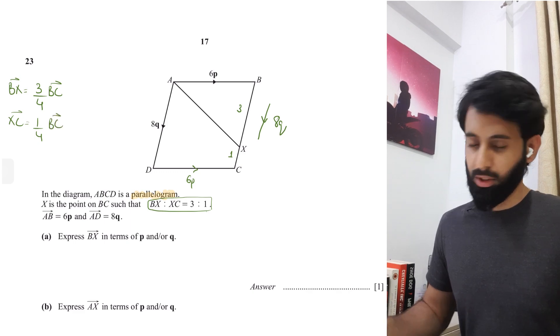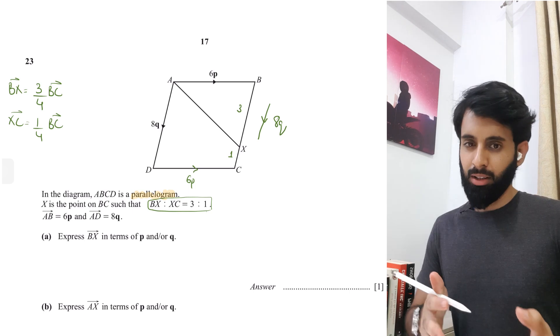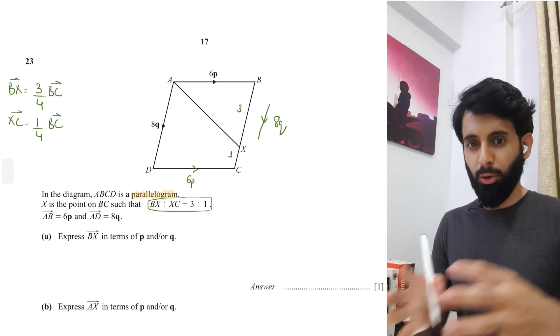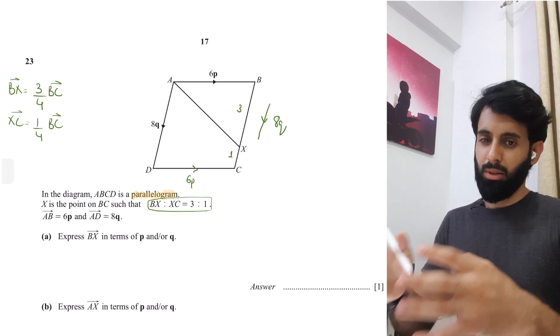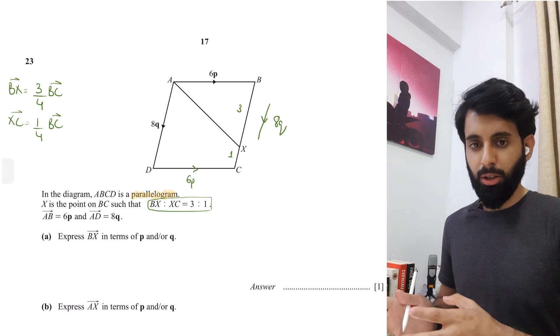Think of it this way: say you have 20 dollars and you want to split it in the ratio 3 is to 1. You're making 4 equal parts of it, dividing 20 into 4 equal parts, giving 3 parts to one and 1 part to another.